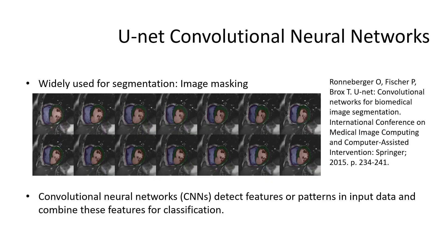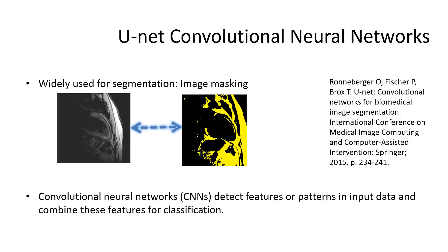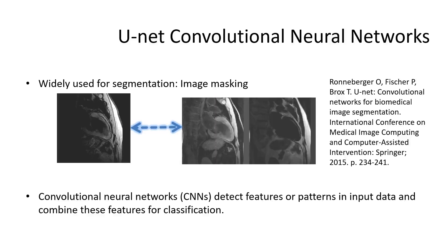Convolutional neural networks, specifically the U-Net architecture, are widely used for segmentation and being explored for quantitative evaluation of cardiac function. CNNs detect features or patterns in input data and combine these features for classification. It is straightforward to assume that a CNN can identify fat, but can a CNN framework provide water-fat separation comparable to state-of-the-art methods?